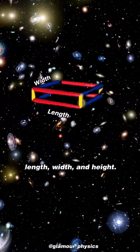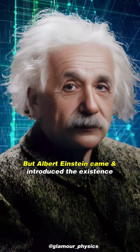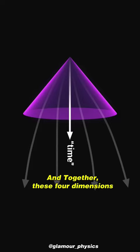But Albert Einstein came and introduced the existence of a fourth dimension, which is time. And together, these four dimensions form a single fabric called space-time, in Einstein's theory.